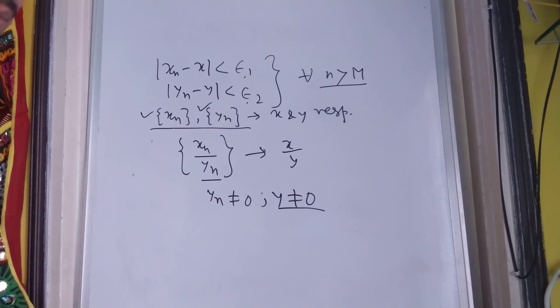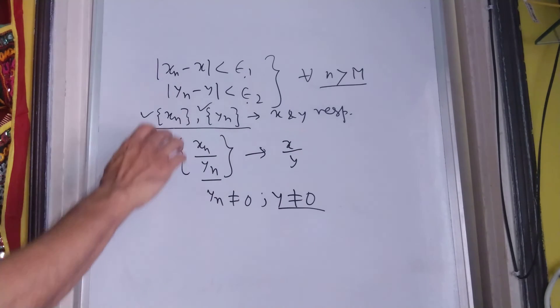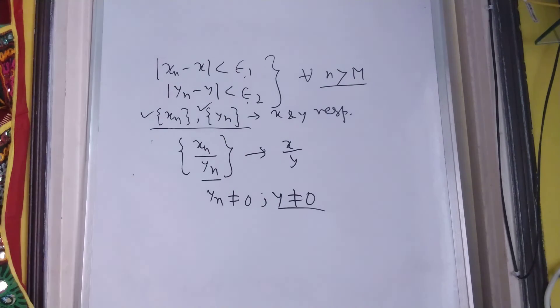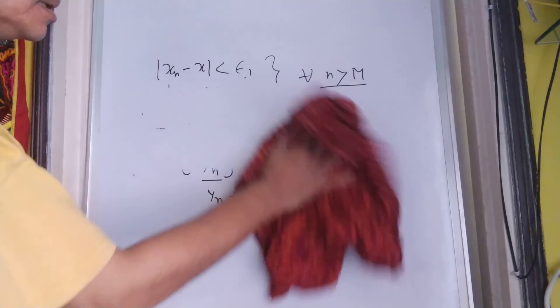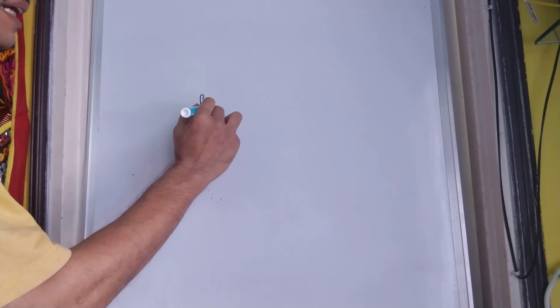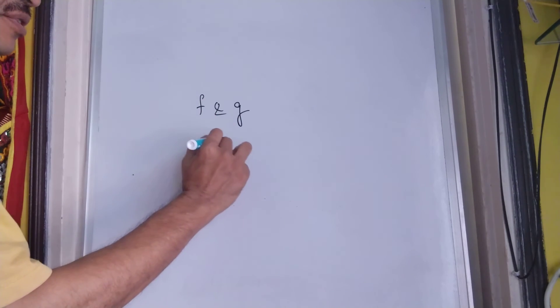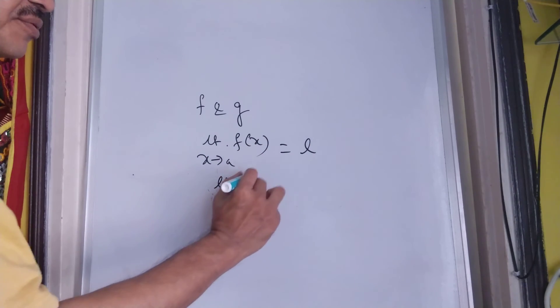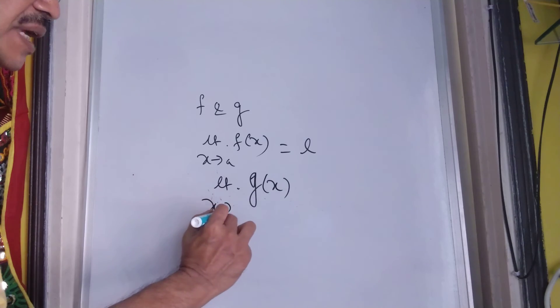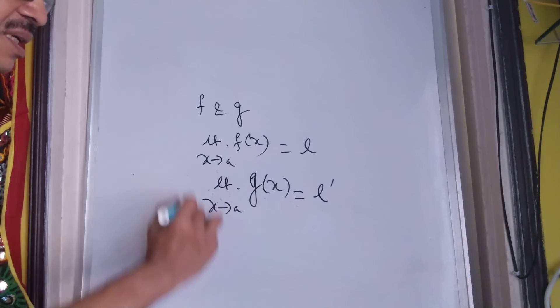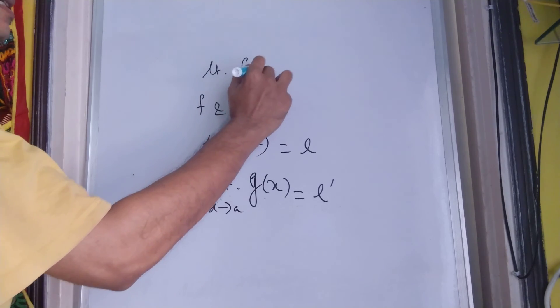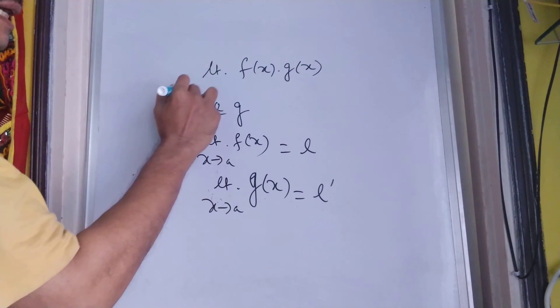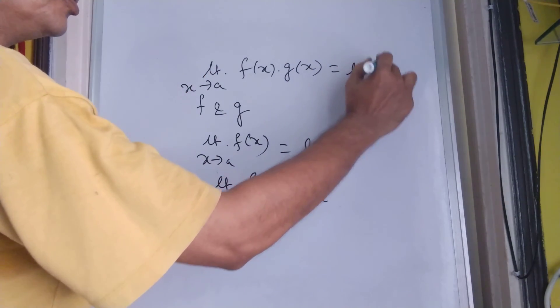This may be applied to find that whenever we have 2 functions whose limit exist, their product and ratio are also the product of the separate limits. We have f and g, and limit of f(x) as x tends to a is l, while limit of g(x) as x tends to a is l prime, so limit of f(x) into g(x) as x tends to a will be l into l prime.